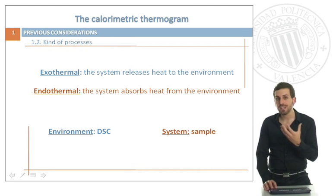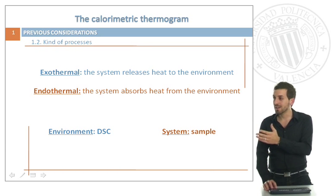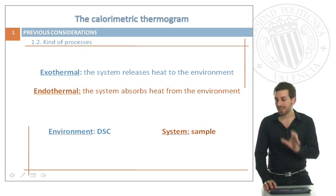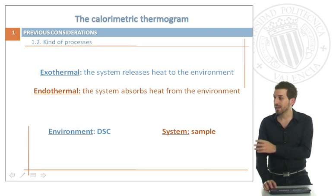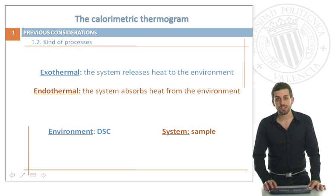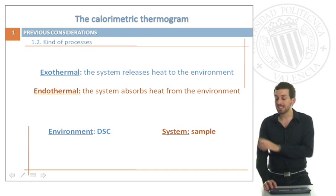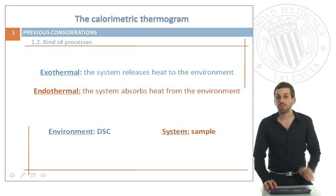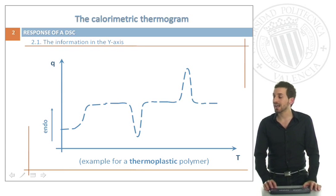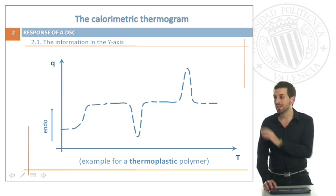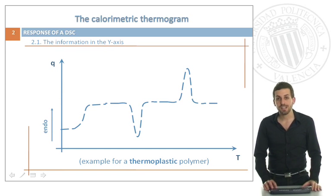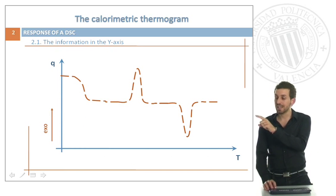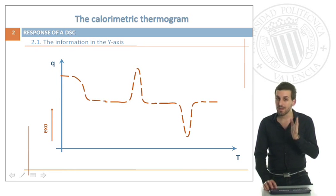What we are really going to see are changes in exothermal transitions as well as endothermal transitions. If we set that our environment is the DSC as a device and our system is the sample, we define exothermal transitions as those in which the system is releasing heat to the environment, and endothermal transitions as those in which the system is absorbing heat from the environment. It is very important to know what sign is shown on the y-axis — if it says 'endo,' the endothermal transitions go in the positive direction. On the other hand, if we see 'exo,' those transitions in the positive axis are the exothermal ones. So be very, very careful.